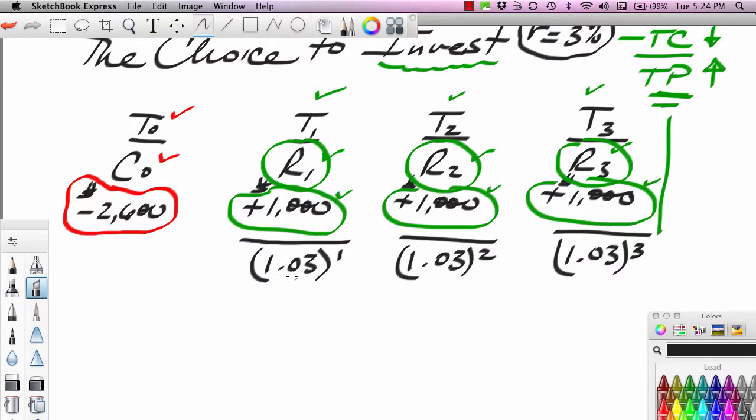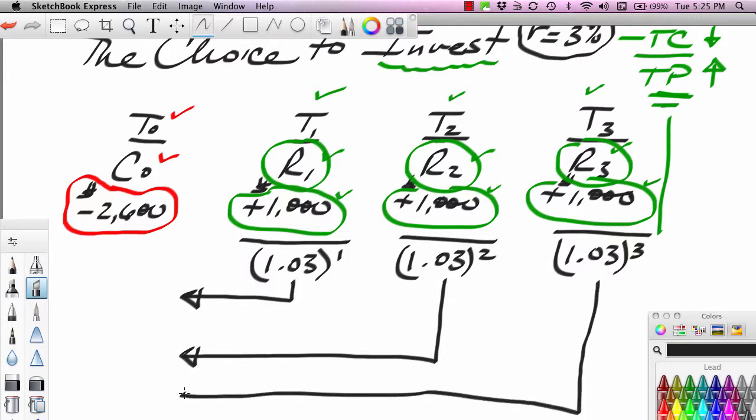To return these future values back into their present value, we need to discount them using the proper interest rate factor. We're assuming these returns are earned at the end of the period. If you take $1,000 and divide it by 1.03, you're going to get a present value of 970.87. So 970.87 in hand today is equal to $1,000 one year from now. If you take $1,000 two years from now, discount it back to the present, you're going to get 942.60.